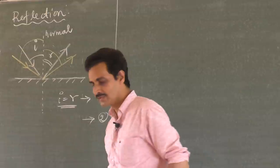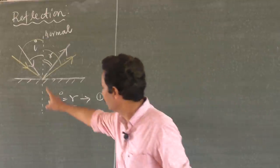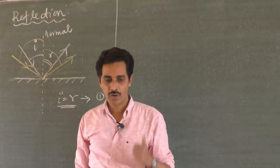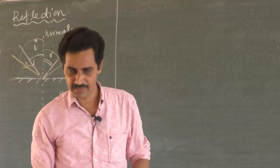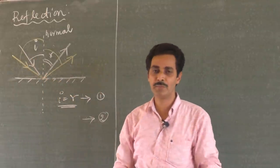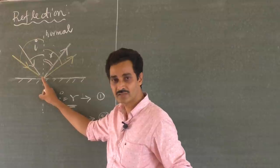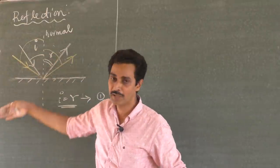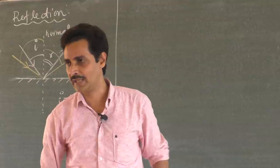The second law of reflection says that the incident ray, reflected ray, and the normal all lie in the same plane. You cannot expect light to fall on a mirror from one direction and come out in a completely different plane — that is impossible. A ray falling along the board reflects along the board, and the normal is also on the board. So incident ray, reflected ray, and normal all lie in the same plane.